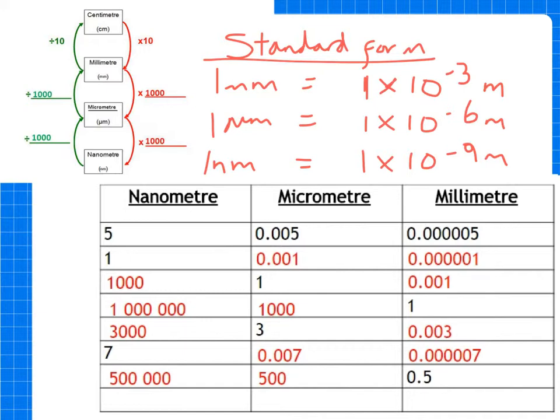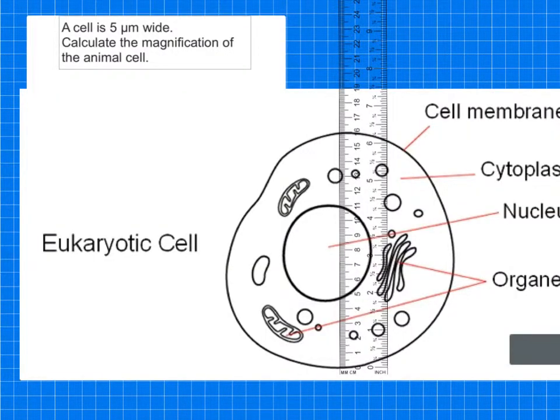Now we're ready to have a go at a couple of examples. When you're measuring the image size, you always use a ruler, and it's essential that you use the same unit. Here's the first question: a cell is 5 micrometers wide, calculate the magnification of the animal cell. The first thing I would do is remind myself of the calculation. I'm going to do my IAM triangle, so if I want to find M magnification, it's going to be I divided by A.